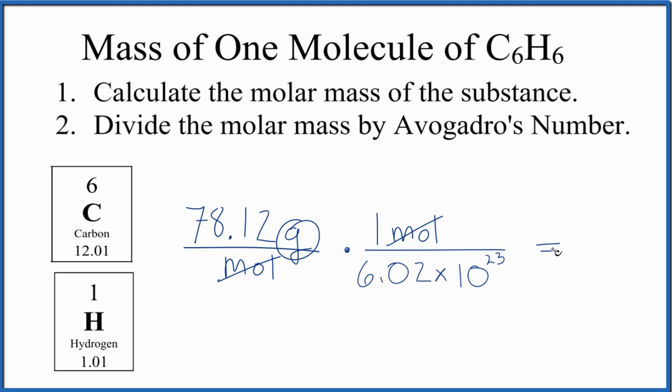When we do that, we end up with 12.98 times 10 to the 23rd - the units are grams. So one molecule of benzene is 12.98 times 10 to the negative 23rd grams.